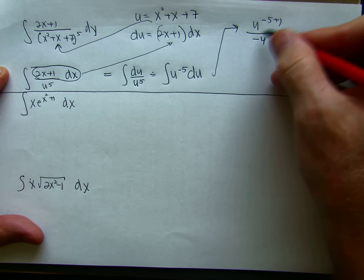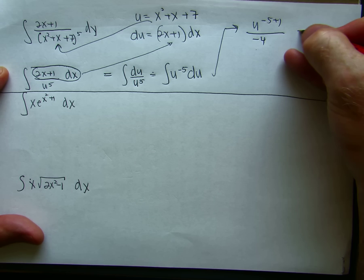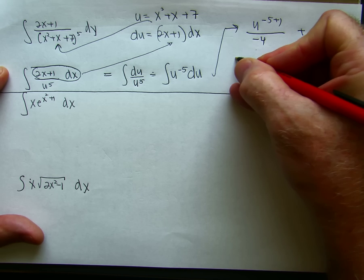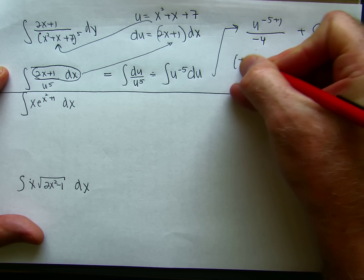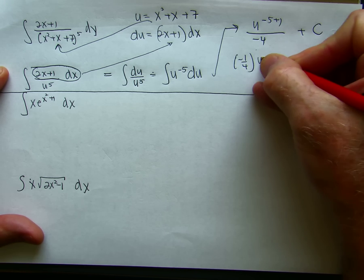Again, it's easy to write this as minus 6. Don't do that. And so I get minus 1 over 4 times u to the minus 4 plus c.